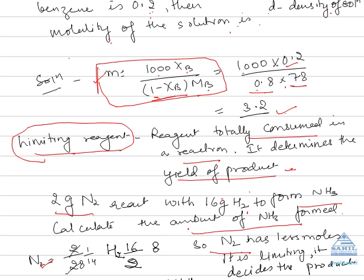First find out the number of moles. Number of moles of N2 is mass over molecular mass, that is 2 over 28, which is 1 by 14. In case of H2, 16g H2 is given, so 16 over 2 is 8. The less amount is of N2, so N2 is our limiting reagent and it decides the product formed.